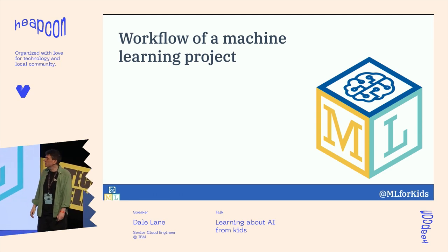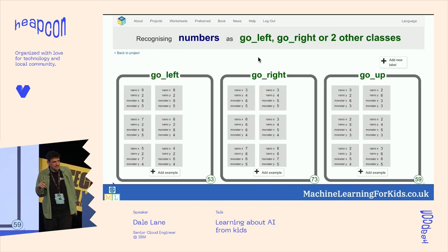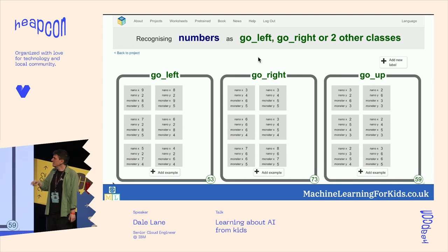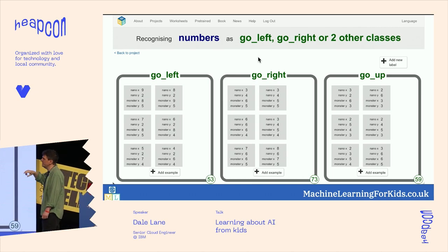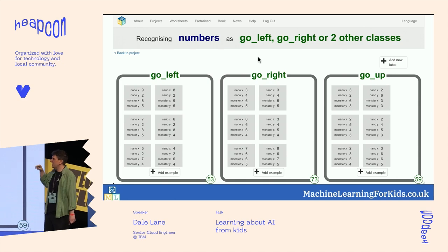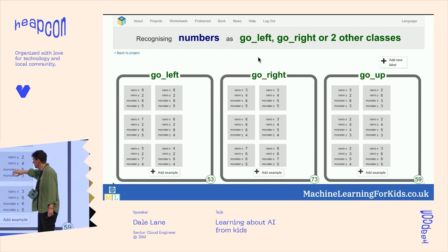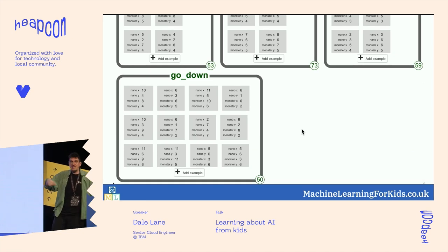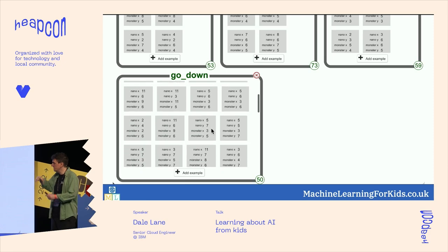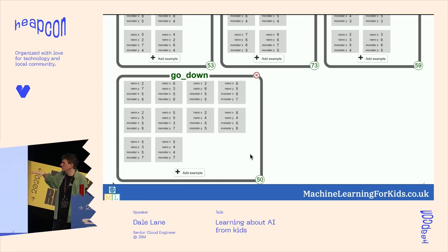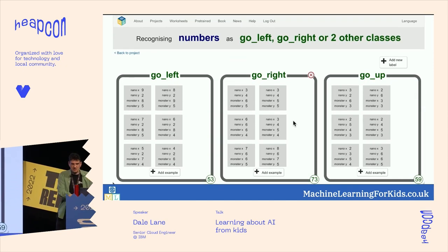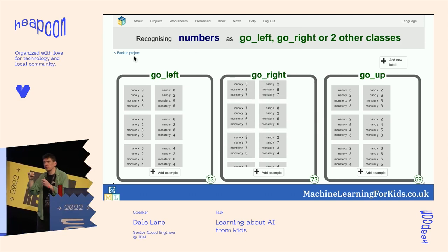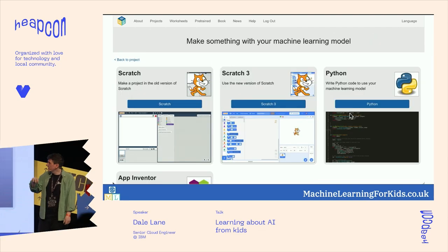That workflow, although we did it with eight-year-olds, holds true for a lot of real-world projects. The next lesson — this is one student's training data from making a Pac-Man project. They made the game in Scratch, and every time they pressed an arrow key — up, down, left, or right — the XY coordinates of the ghost and their character were captured and put into one of the training buckets. So they were training a model by playing the game, and the more they played, the more examples they collected.